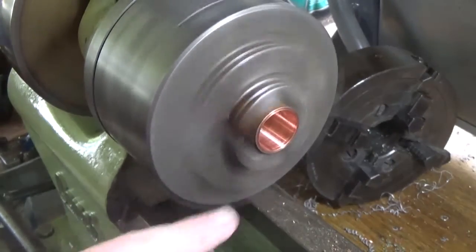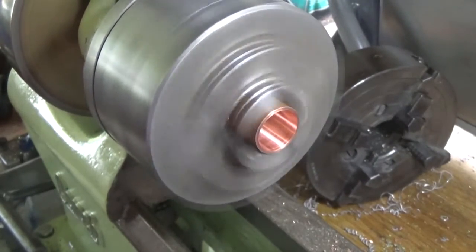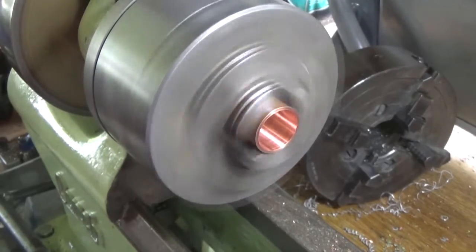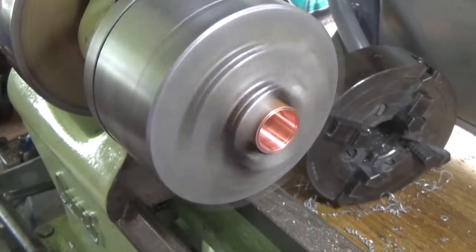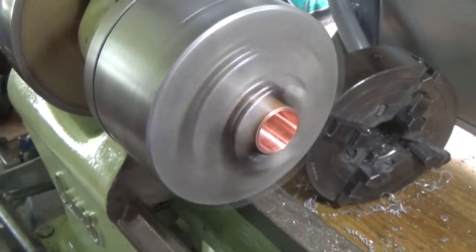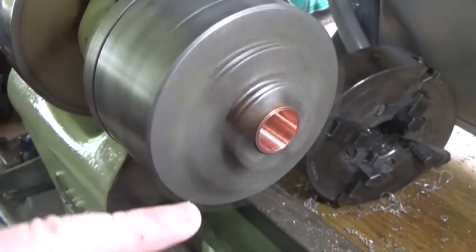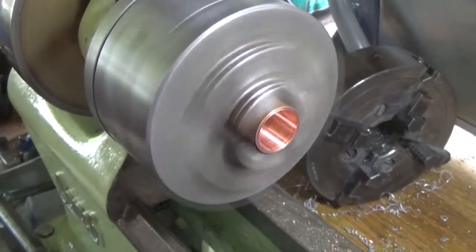So I've got a copper bush there which looks good. Copper is rotten stuff really to turn and needs some lubrication, but that's right through to a nice parallel copper bush. That's a good start.